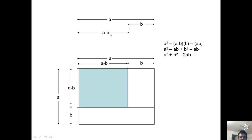Okay, let's try to prove a minus b all square. Let the length of this line be a, the whole line be a.